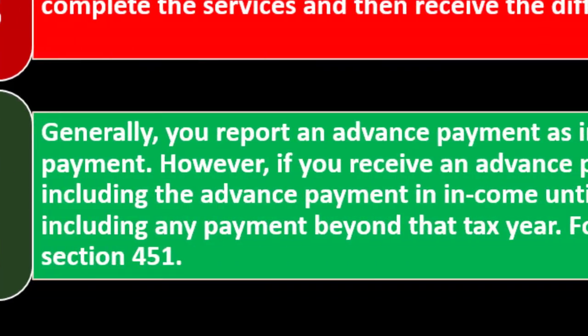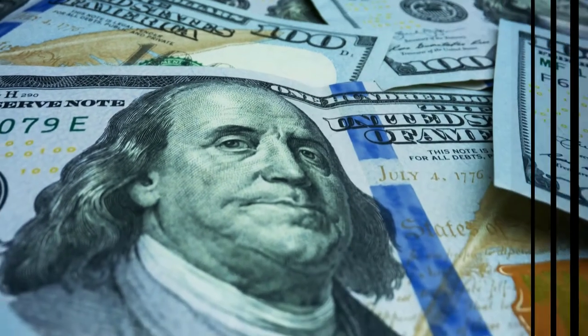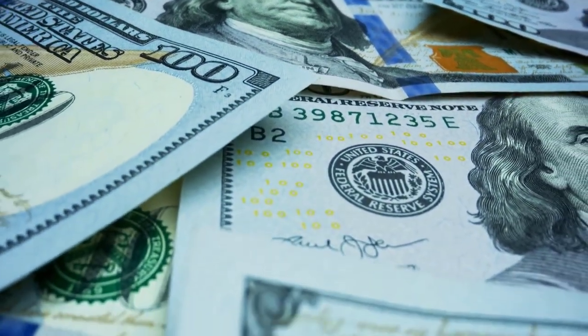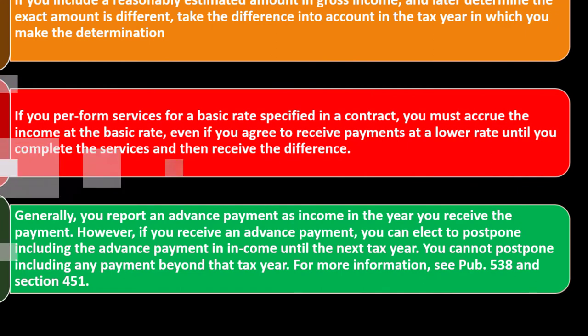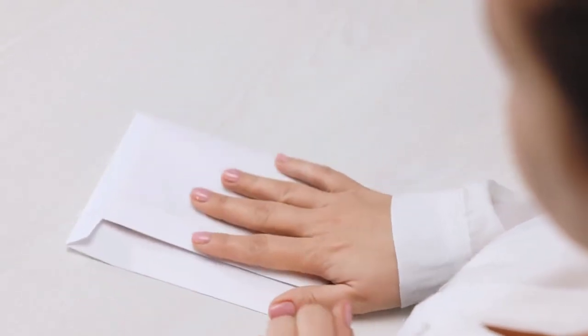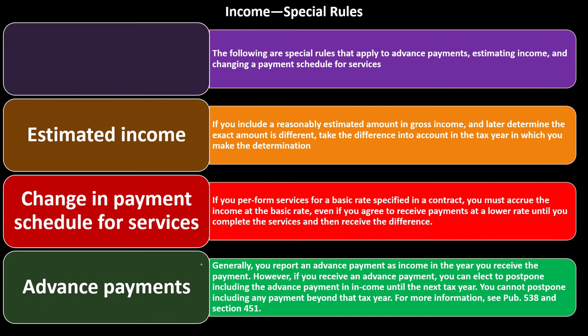Advanced payment: generally, you report an advanced payment as income in the year you receive the payment. Notice that's a deviation from a strict accrual method — because under accrual, if someone gave you money before you did the work, you wouldn't record it as income even though you got the cash. But the IRS wants you to record it in that case, which is a deviation. So if you get an advanced payment, you have to be a little more careful because they're deviating from accrual method to the tax code method, reporting income where they want it.